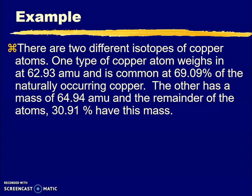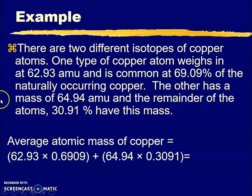Then we plug this into an equation. So 62.93—notice I didn't do anything to that number, I just brought it down—times the decimal for its relative abundance. I moved that decimal two places to the left so it becomes 0.6909.